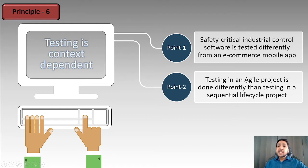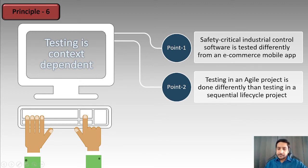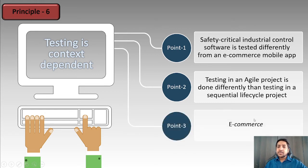Similarly, testing in an agile project is done differently than in a sequential development lifecycle model. We will cover agile and sequential lifecycle models in Chapter 2. Based on what model you select, your testing approach will change. And e-commerce testing differs from all other product contexts as well.